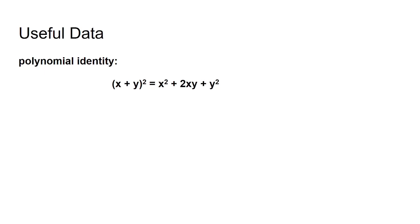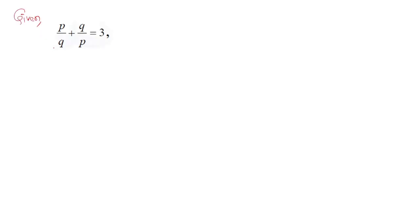The polynomial identity is (x + y)² = x² + 2xy + y². Now let's solve this problem. Given in the question: p/q + q/p = 3.